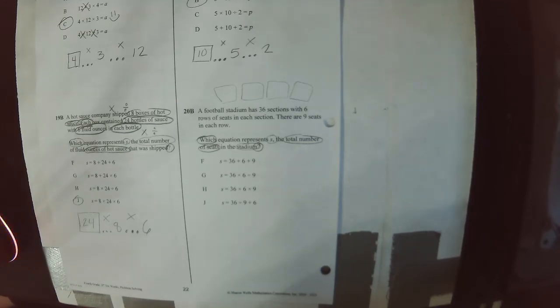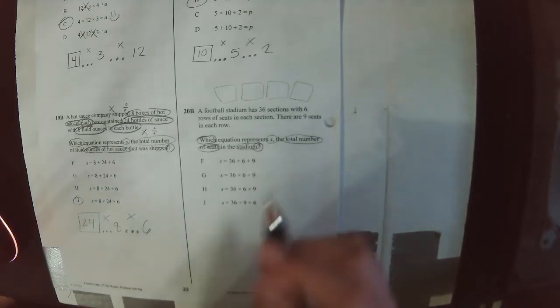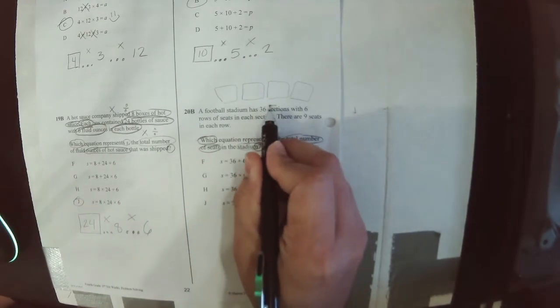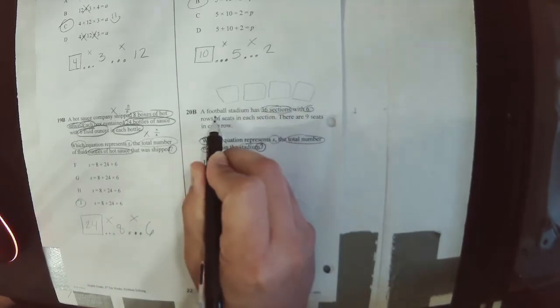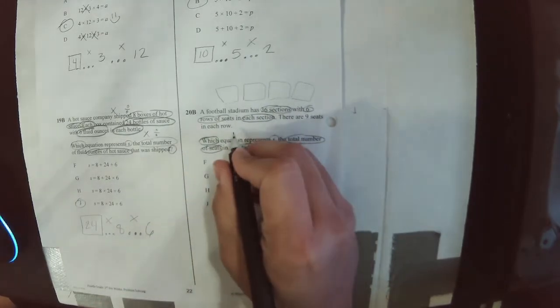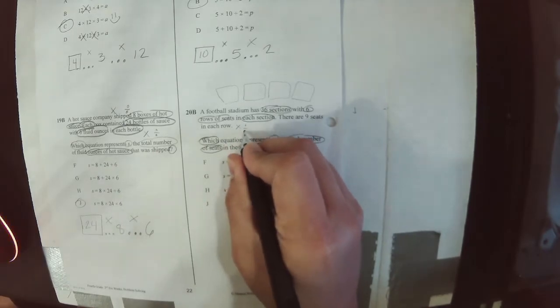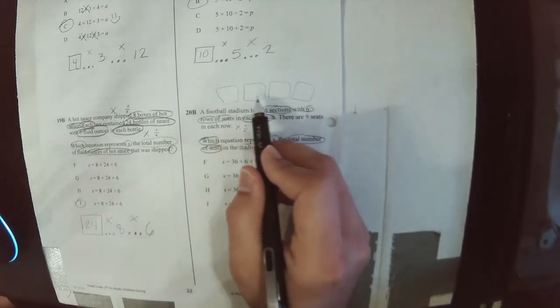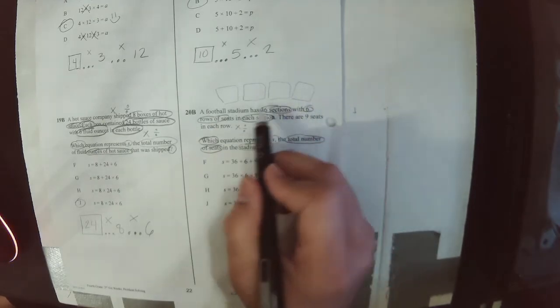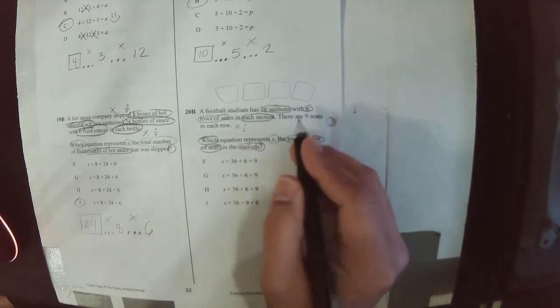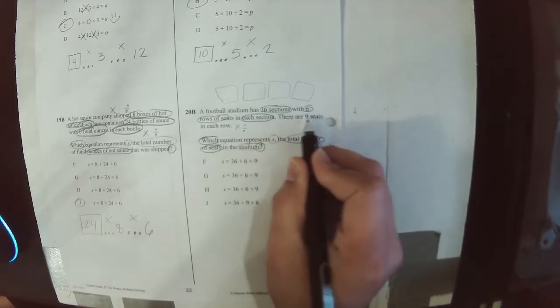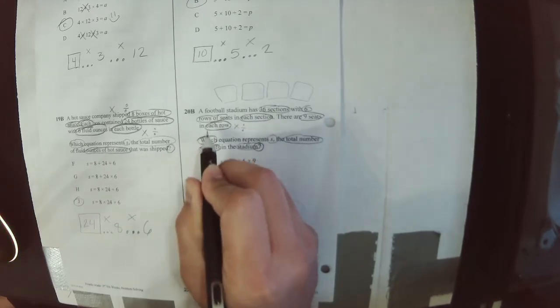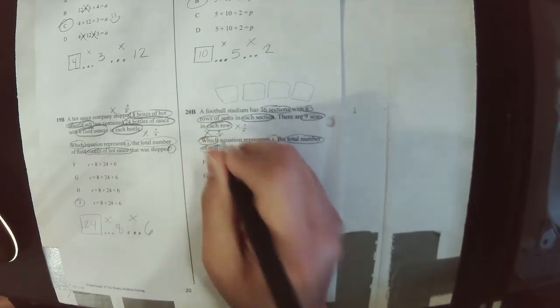A student points out: it says 'in each row,' and doesn't 'each' signal multiplication? You're right. When it says 36 sections with 6 rows of seats in each section, it means multiplication or division. So all these seats are put into groups, and every single group has 6 rows. There are 9 seats in each row — again, 'each row' is reminding me: multiplication or division.